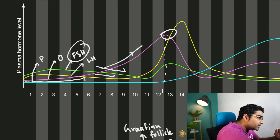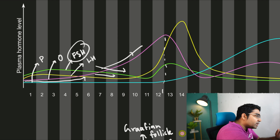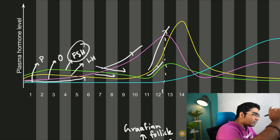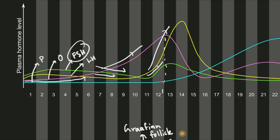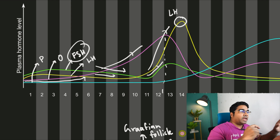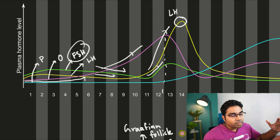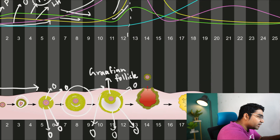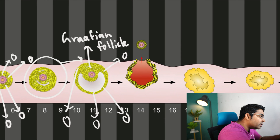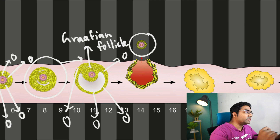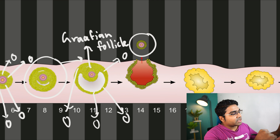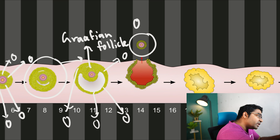Around the estrogen spike, we can see that the LH level — the yellow line — spikes, and FSH goes up as well. Right around day 13 to 14 we have an LH peak, and at the peak of LH levels in the plasma, ovulation is stimulated. There is a release of the secondary oocyte from the Graafian follicle — this process is known as ovulation.